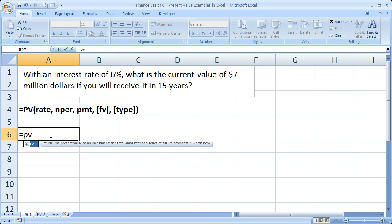So equals PV open parentheses. Now our rate, that's very easy, just our interest rate of 6%, so 0.06. Now remember when you're doing the interest rate here you have to do it as a decimal, so 0.06 - you can't type in a whole number like six, it's not going to interpret that correctly. The number of periods, that's very easy, it's 15 years, so our number of periods is 15.